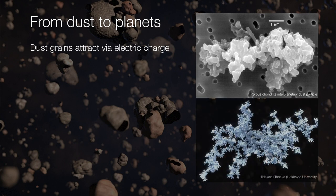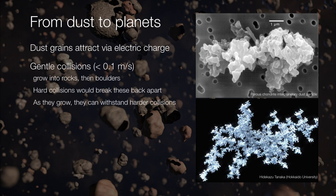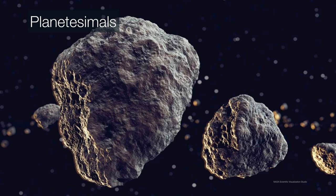They become cosmic dust bunnies. As a matter of fact, they can grow quite large, and they do so by just undergoing very gentle collisions, which allows them to grow into rocks, then into boulders. Anything harder or faster would break these things apart. But as these things grow, they can withstand harder and stronger collisions until they grow into what are now called planetesimals.